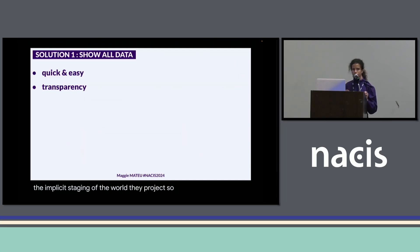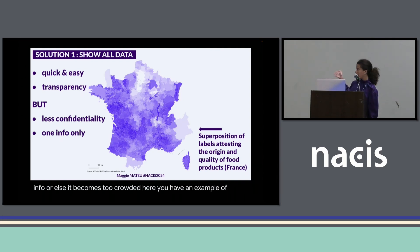The first solution to avoid the MAUP would be to not count things into things, to show all the data, raw data. It's quick and easy, it shows the transparency of the data being used, but at the same time, we lose the confidentiality we talked about before. On those kind of maps, you can only really show one info or else it becomes too crowded. Here you have an example of a map made with QGIS showing the superposition of labels attesting the origin and quality of food products in France.